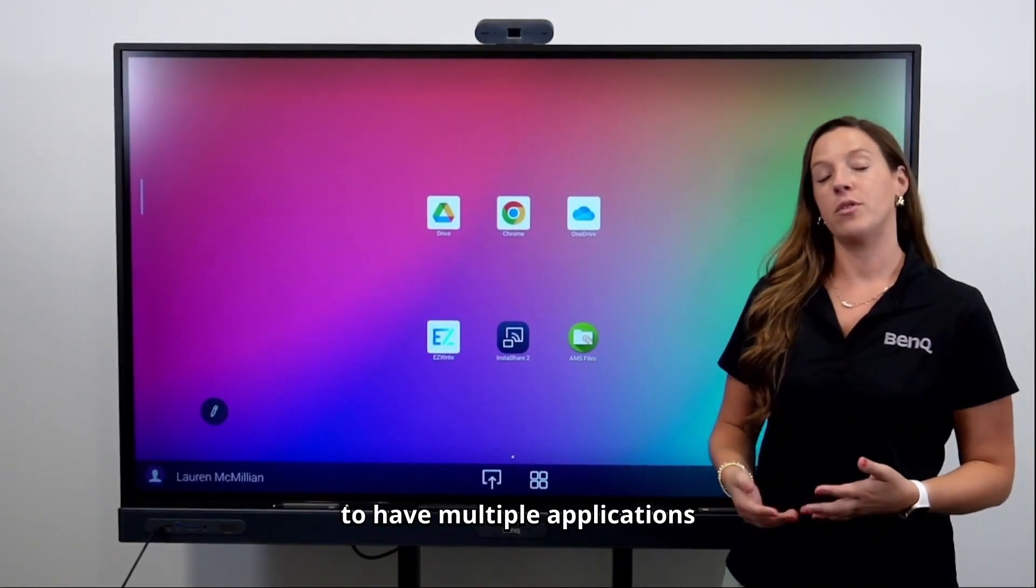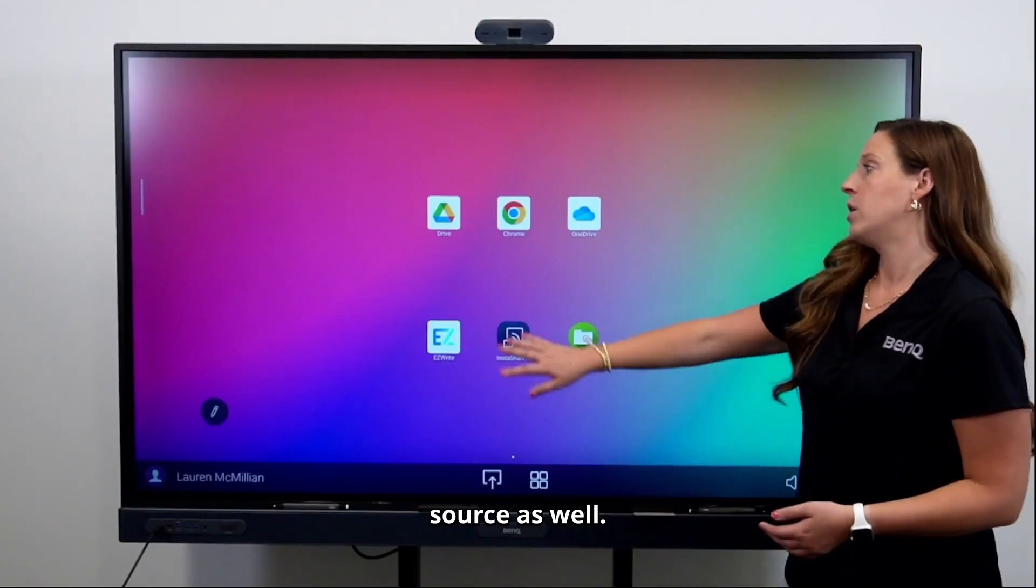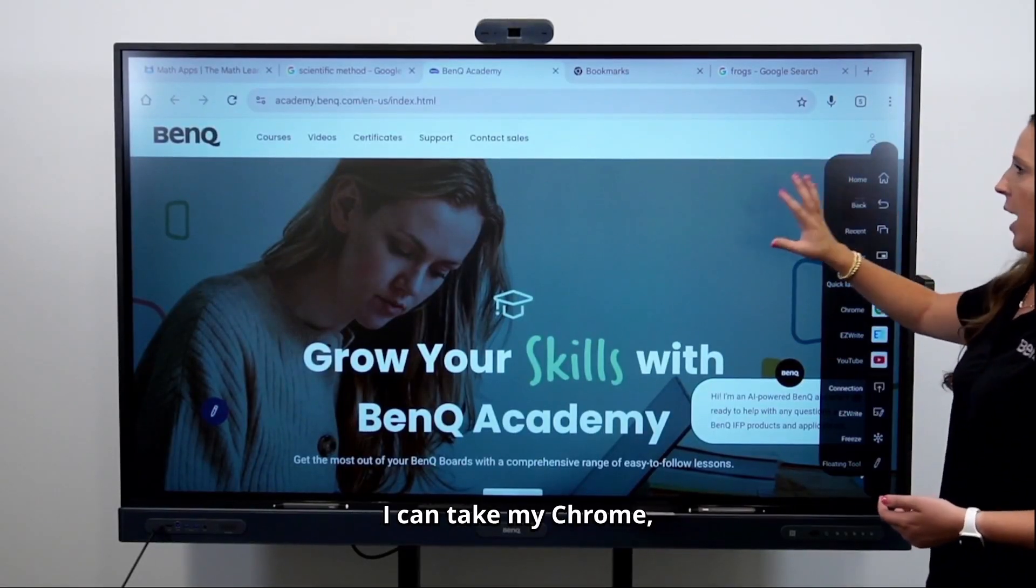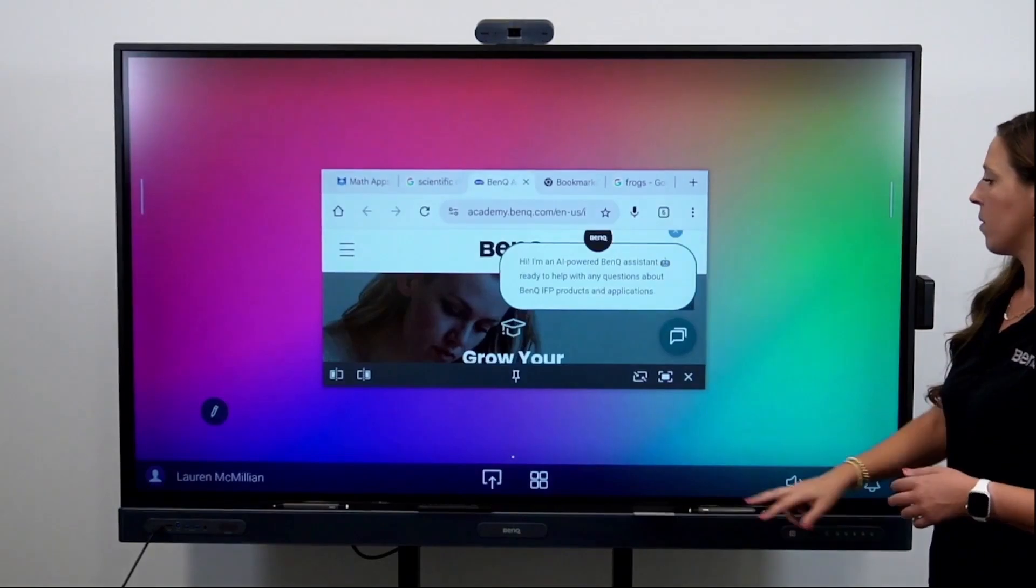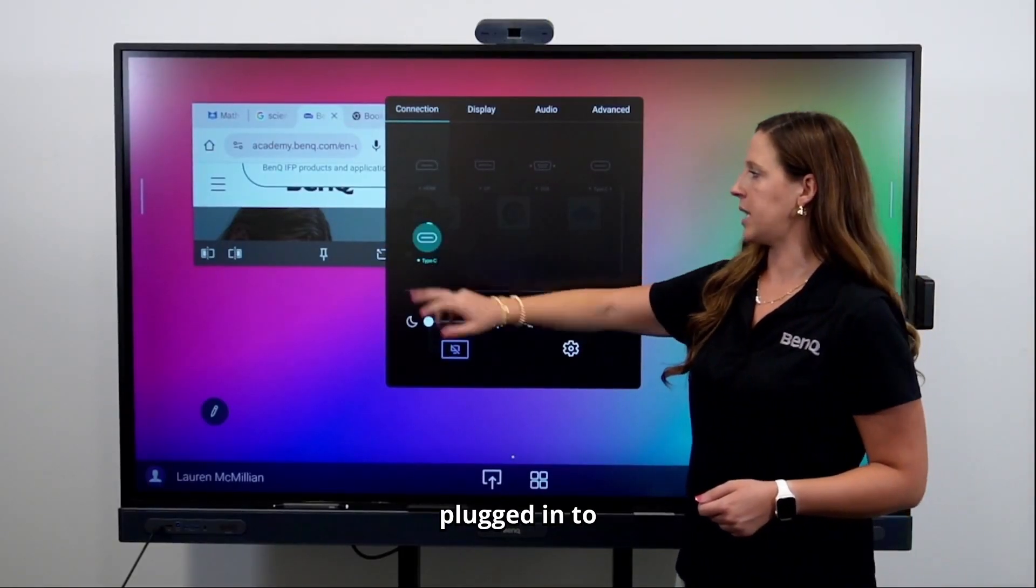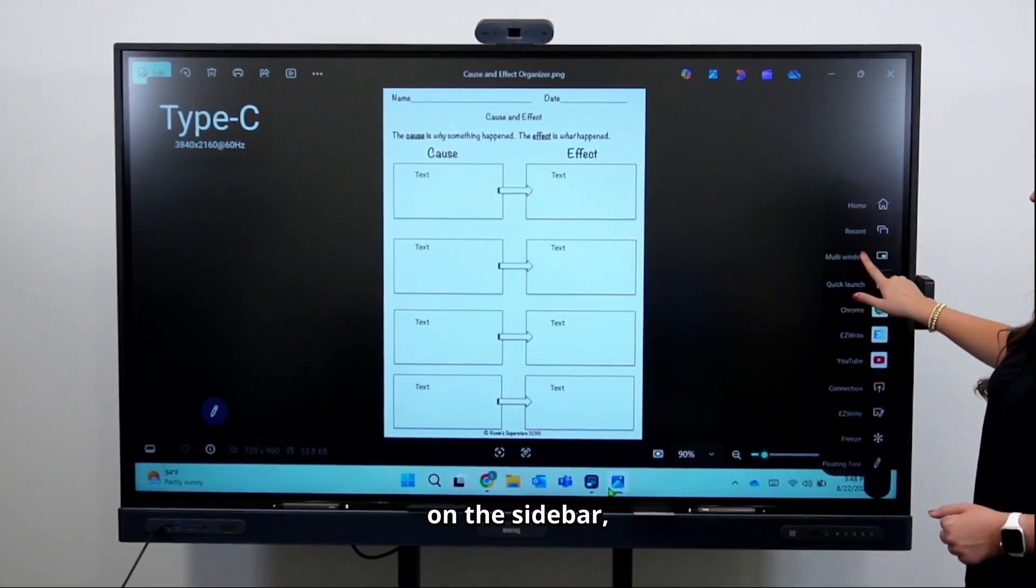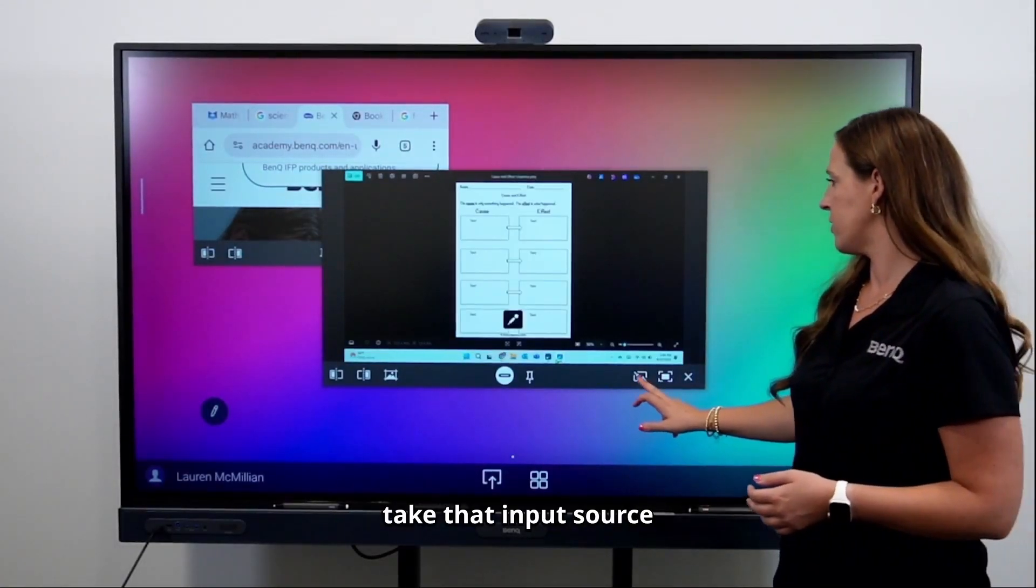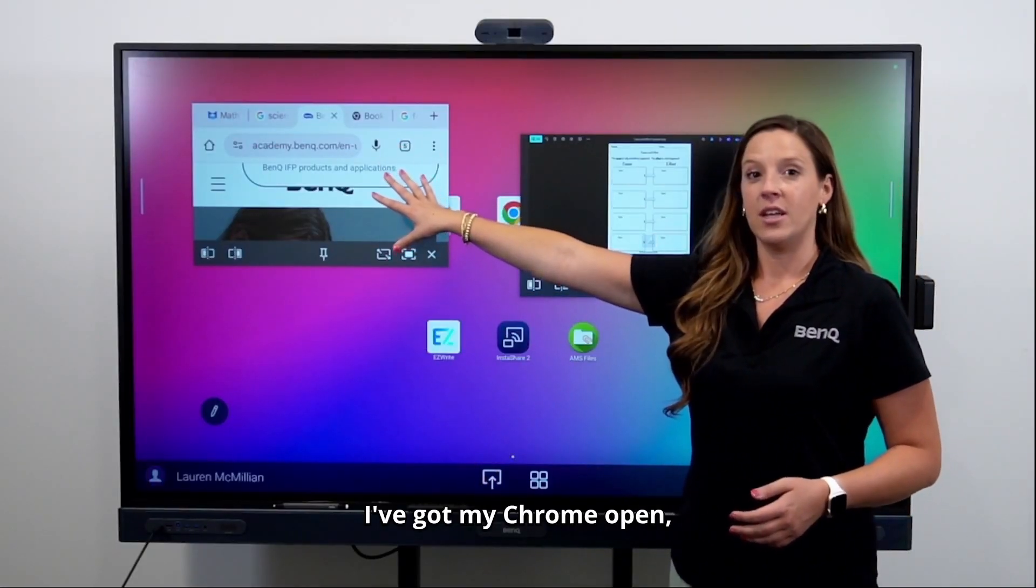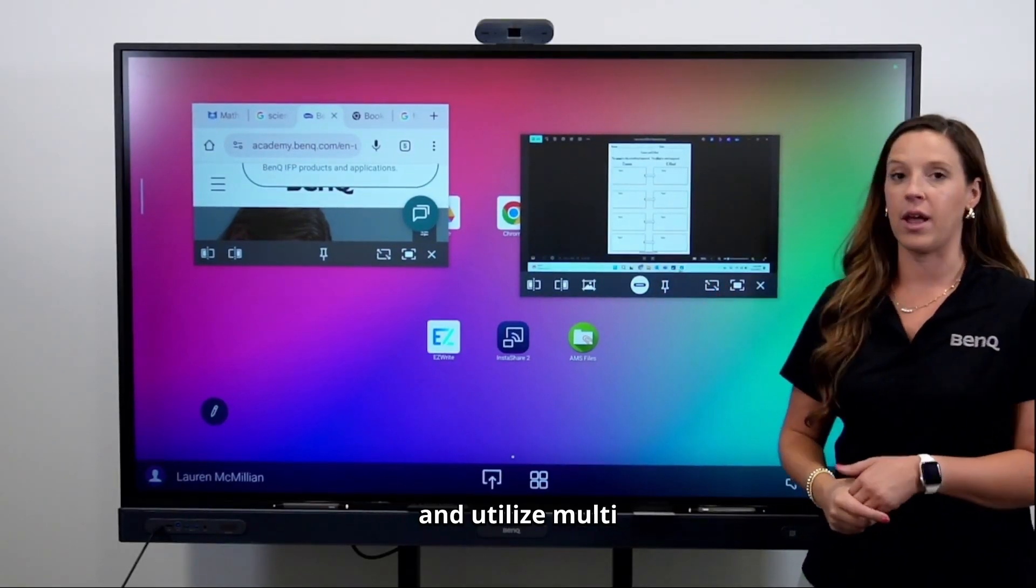In addition to using multi-window to have multiple applications on the board open, you can also utilize multi-window with an input source as well. For example, if I have Chrome open and I want to have multi-window between Chrome and my computer that's connected, I can take my Chrome, put it in multi-window. Then I can grab my input source. So right now I have my computer plugged in to the USB-C port. It's going to bring my computer up. Again, I tap on the sidebar, tap multi-window, and now it's going to take that input source and make it a multi-window. So now I've got my Android open, my Chrome open, and my input source as well. So if you have your computer hardwired, you can switch over between your sources and utilize multi-window as well.